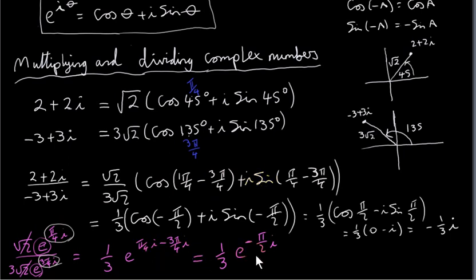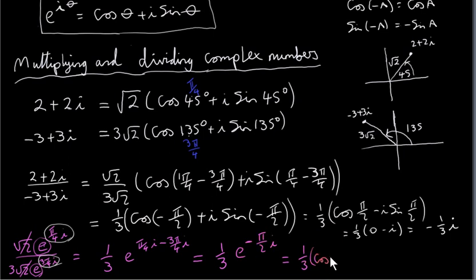We get pi over 4 minus 3 pi over 4 equals minus pi over 2. We can now rewrite it in rectangular form as one third times cos of minus pi over 2 plus i sine of minus pi over 2, which breaks down to minus one third i. You can see how much easier that is to show compared to the earlier proof.